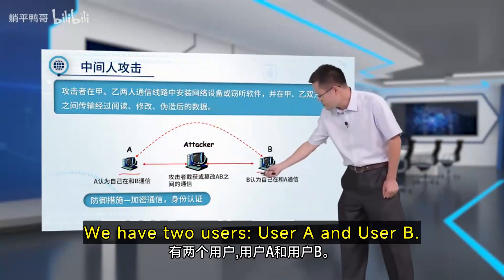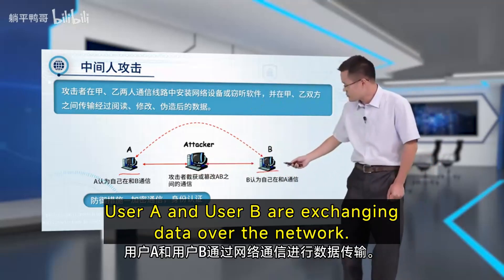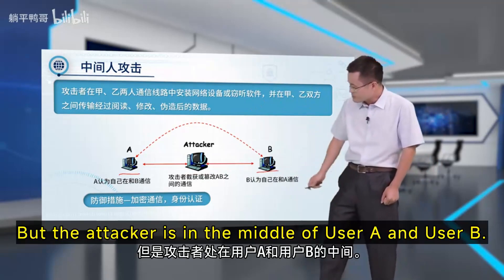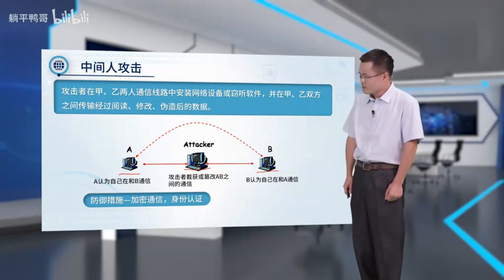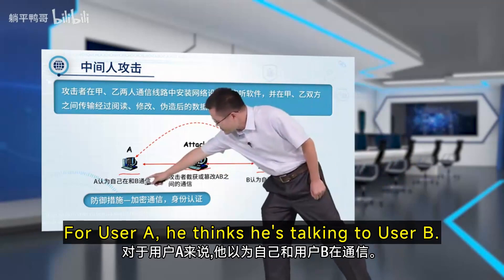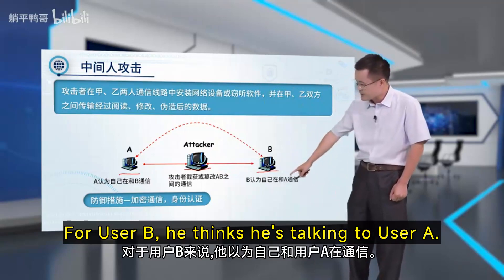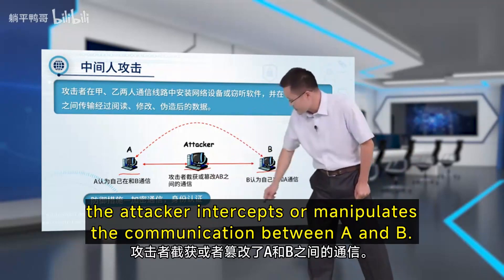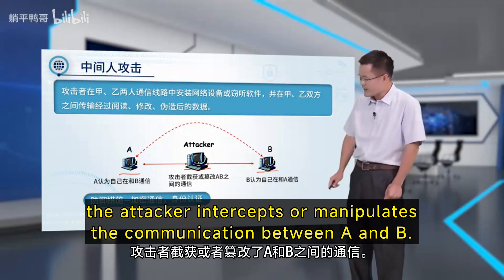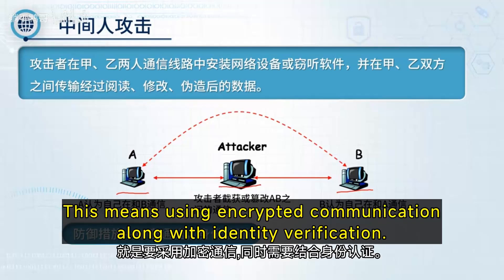We have two users: User A and User B. They are exchanging data over the network, but the attacker is in the middle. User A thinks he's talking to User B, and User B thinks he's talking to User A. In fact, the attacker intercepts and manipulates the communication between A and B. The defense is to use encrypted communication along with identity verification.